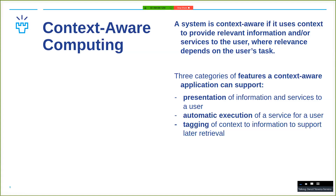A context-aware system will generally do things automatically. When we build a context-aware system, there are going to be instances where the system is actually making decisions for you. So it will try to make sense of what you're doing based on the sensor data it's getting. The tagging of context is an interesting one — it also allows control. Creating something autonomous means that at some point the user will want to have some control over the system.